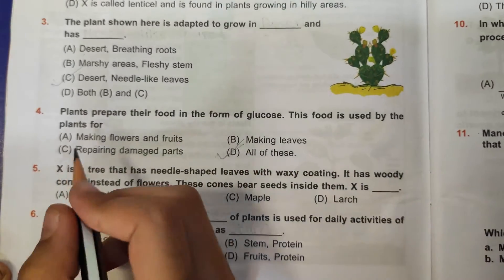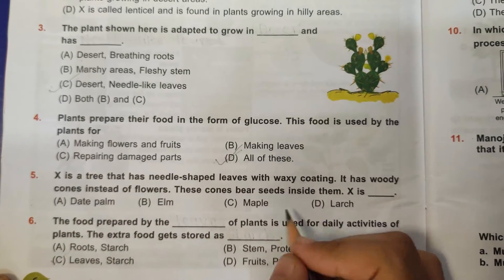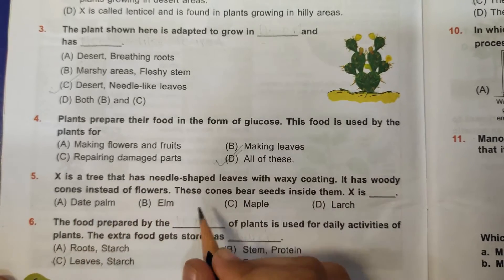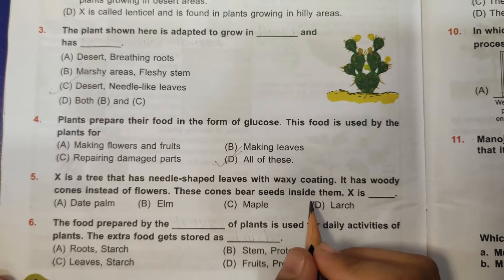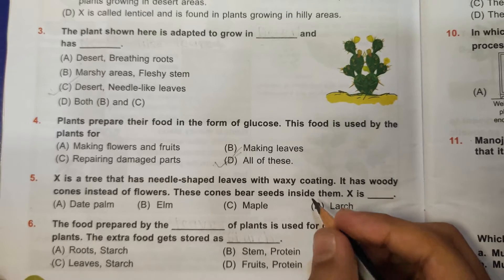Fifth question: X is a tree that has needle-shaped leaves with waxy coating. It has woody cones instead of flowers. These cones bear seeds inside them. X is... so it should be larch, so D larch is the correct answer.